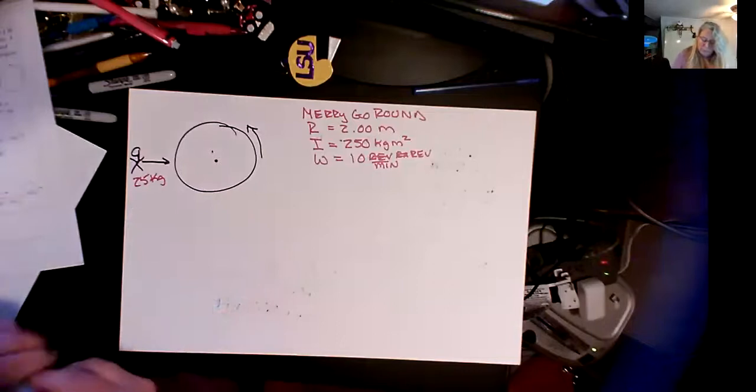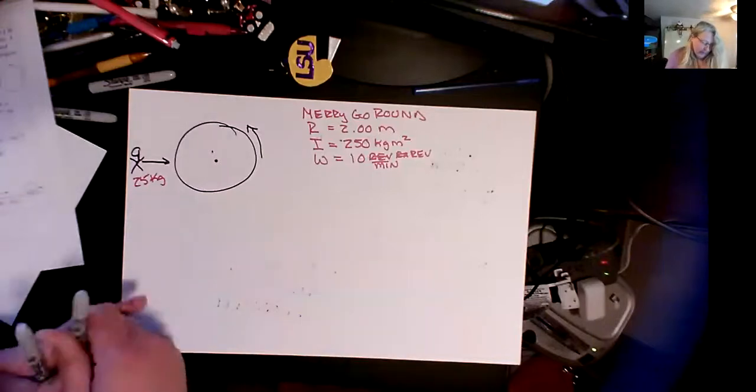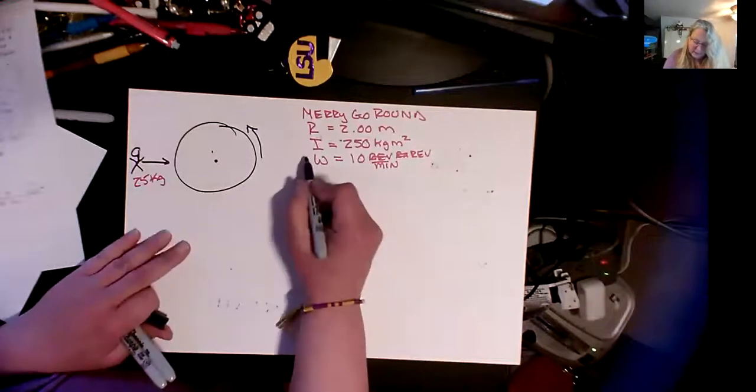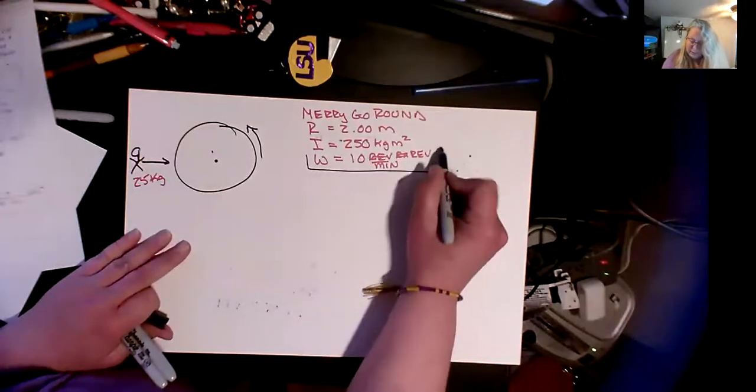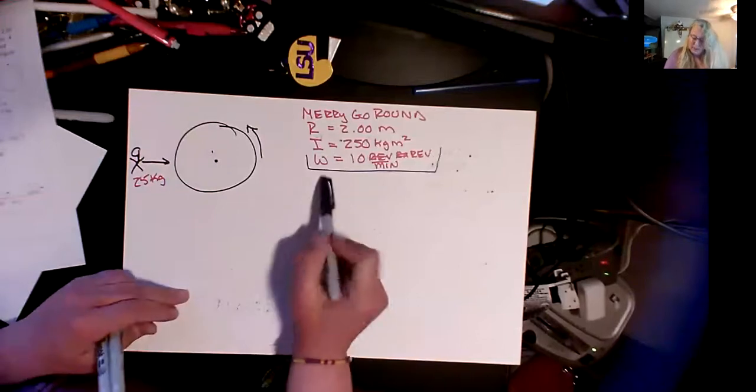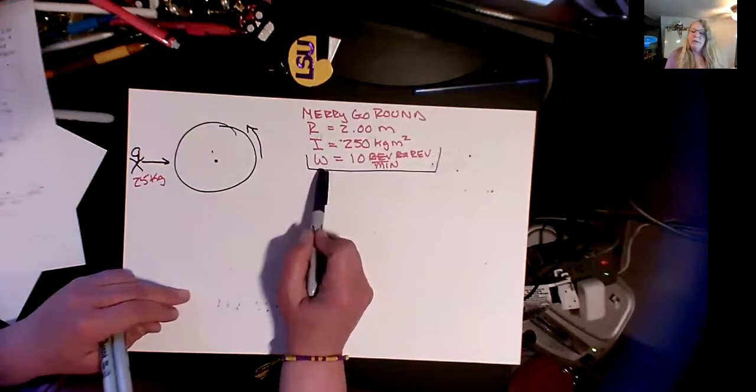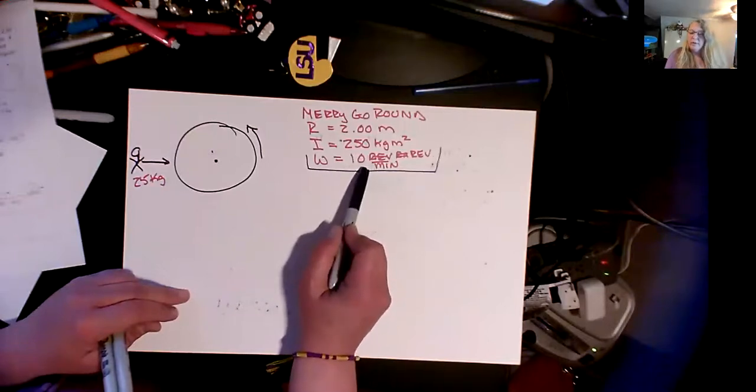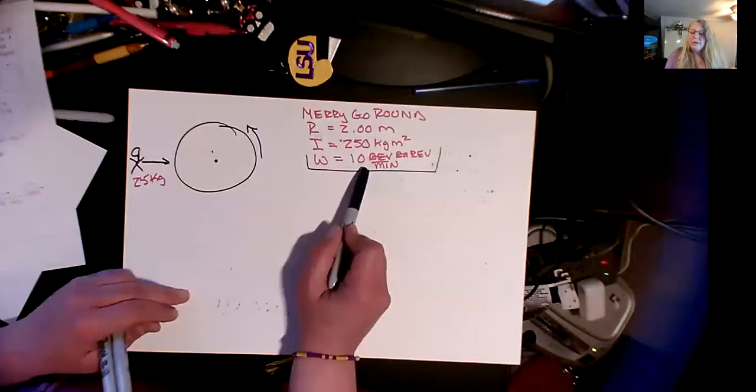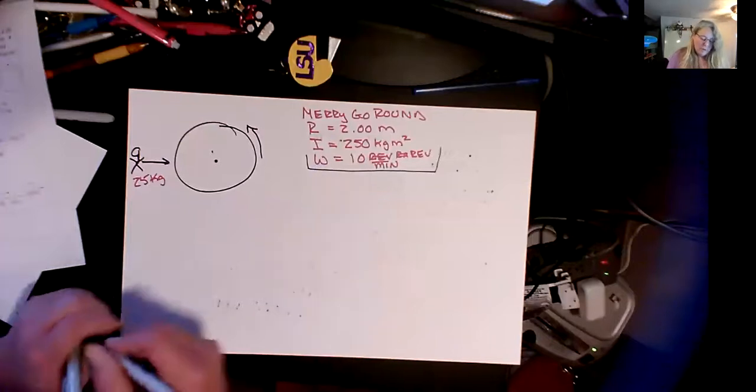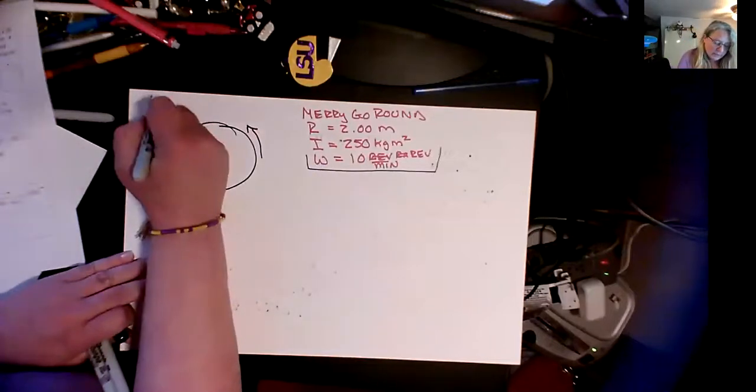So one thing I want to point out, and it's a little beef that I have, and Mastering Physics does it, so I just went ahead and left this as it is, is that when you're asked for omega, this is in terms of revolutions per minute. If it asks for an answer in terms of revolutions per minute, it's okay to call that omega. But remember that omega is in terms of radians per second.